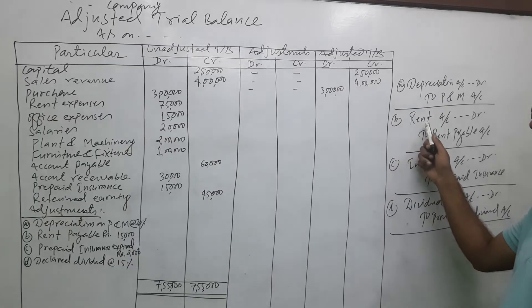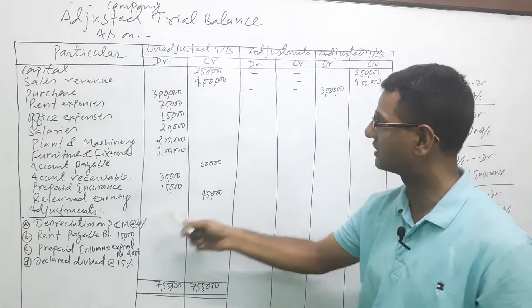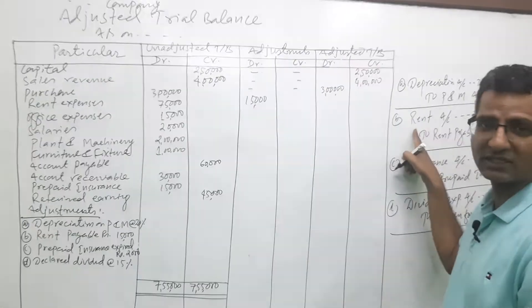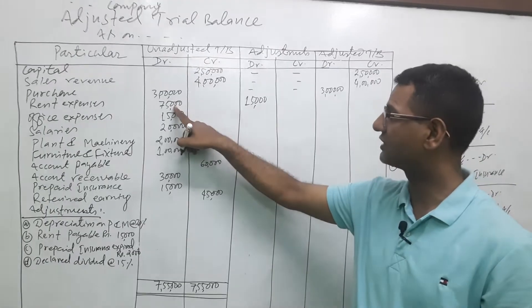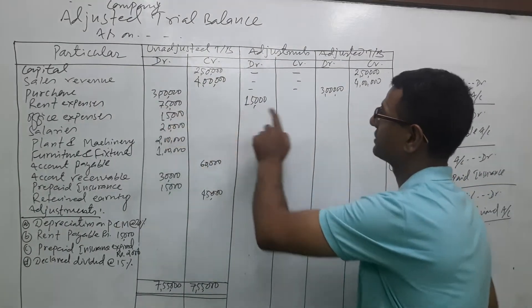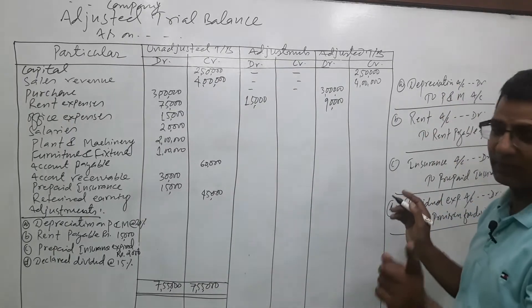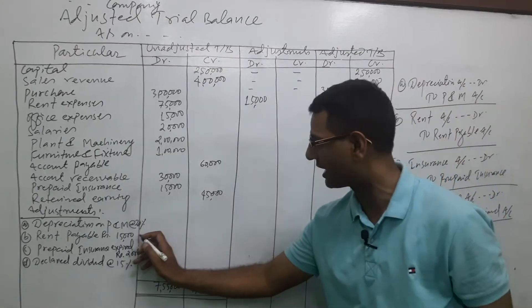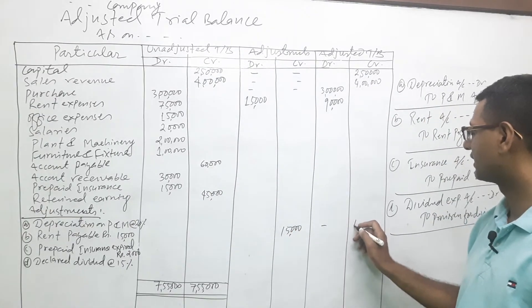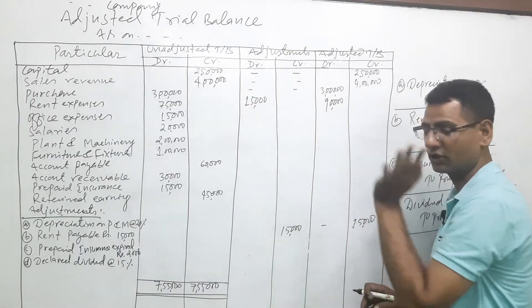The entry for rent is: rent account debit to rent payable. Rent is already in debit in the unadjusted column, and in the adjustment column it is also debit — so debit plus debit means we add them. That means total rent is 75,000 plus 15,000 = 90,000, written on the debit side. Rent payable is a liability, so it goes on the credit side. The rule: if debit is on top, credit goes below; if credit is on top, debit goes below — a very simple rule.